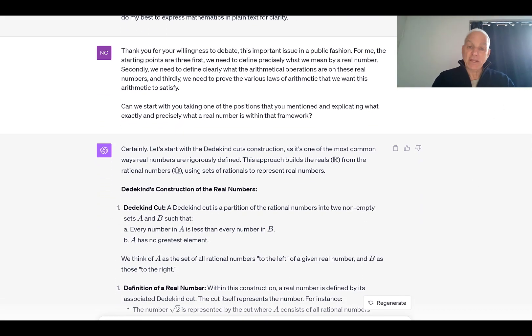Me: Thank you for your willingness to debate this important issue in a public fashion. For me, the starting points are three. First, we need to define precisely what we mean by a real number. Secondly, we need to define clearly what the arithmetical operations are on these real numbers. And thirdly, we need to prove the various laws of arithmetic that we want this arithmetic to satisfy. Can we start with you taking one of the positions that you mentioned and explicating what exactly and precisely a real number is within that framework?